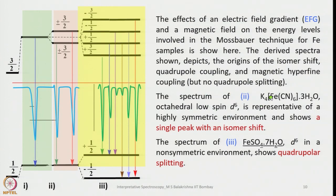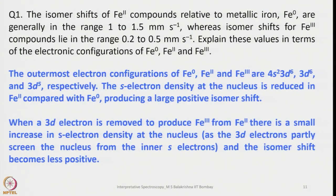The spectrum of K₄Fe(CN)₆·3H₂O — octahedral low spin d⁶, Fe(II) — is representative of a highly symmetric environment and shows a single peak with an isomer shift. The spectrum of Fe(CO)₄·7H₂O is also d⁶ but in a non-symmetrical environment, showing quadrupole splitting. The isomer shift of Fe(II) compounds relative to metallic iron (Fe⁰) are generally in the range of 1 to 1.5 mm/s, whereas isomer shifts for Fe(III) compounds lie in the range of 0.2 to 0.5 mm/s.